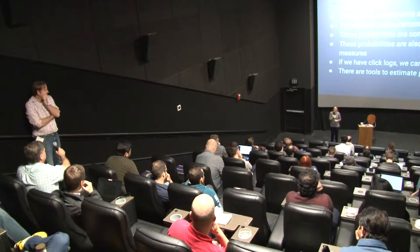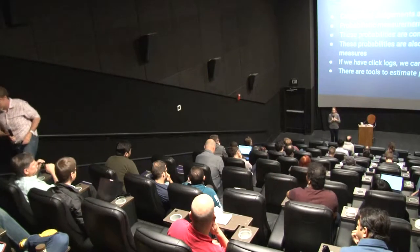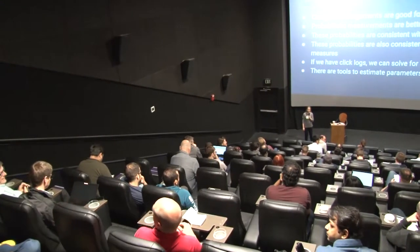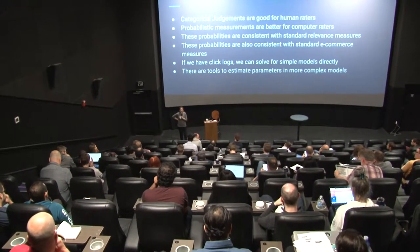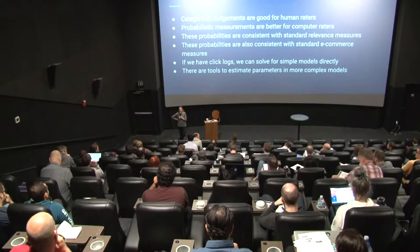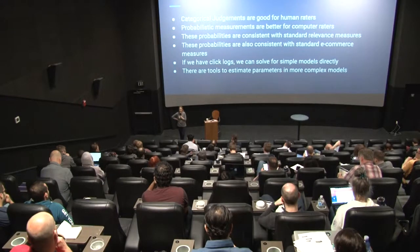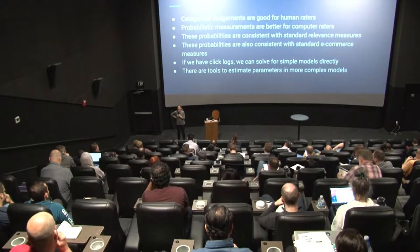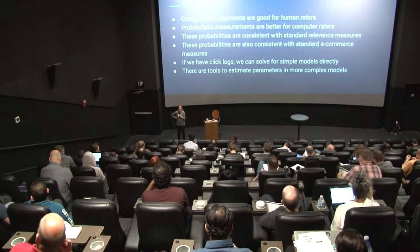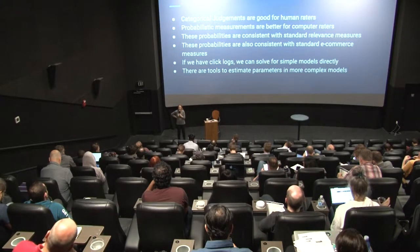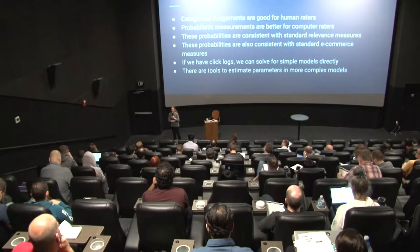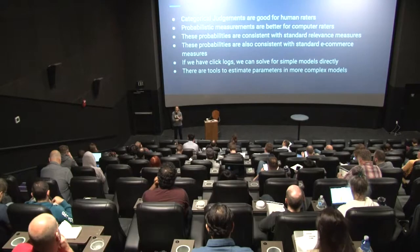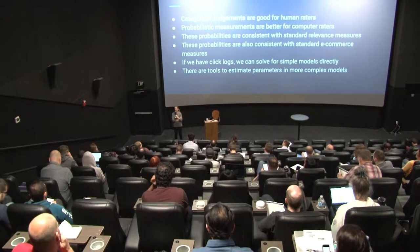Q&A: If someone clicks on result five with no other clicks, they're attracted to five — but in some way they're implying one through four aren't as attractive. Can you get an implied negative signal to enhance the model? That is exactly what this model assumes: there is a one-minus-alpha probability that they were attracted to it and didn't click on it. It's a probability — you don't know they weren't attracted to it. Regarding combining attractiveness and satisfaction for judgment lists: leaving them separate seems useful — if something has high click-through and low conversion, that's an informative signal.